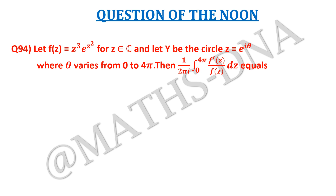The question is: let f(z) = z³·e^(z²) for z belonging to ℂ, and let γ be a circle with z = e^(iθ) where θ varies from 0 to 4π. Then find the value of (1/2π) ∫₀^(4π) [f'(z)/f(z)] dz.